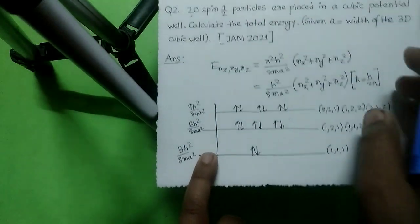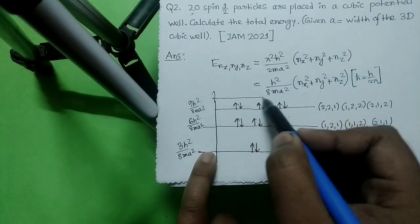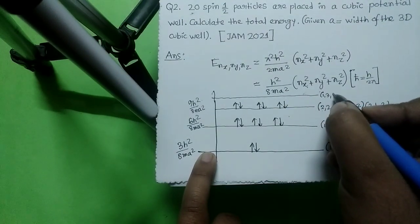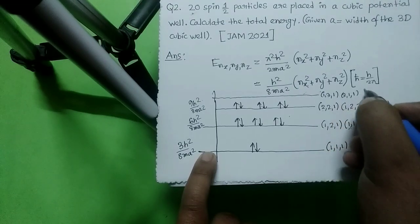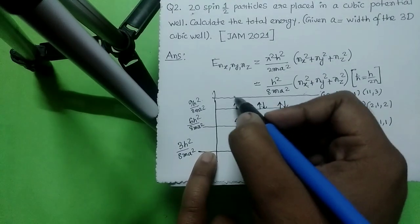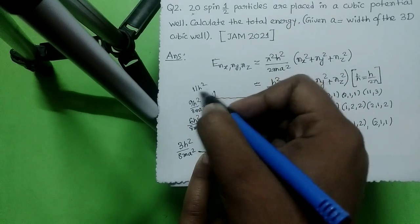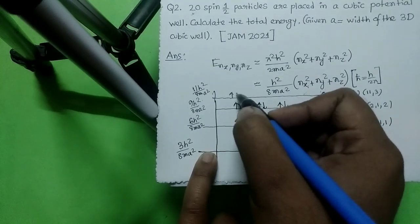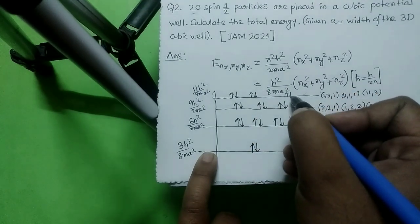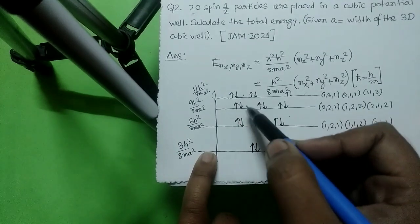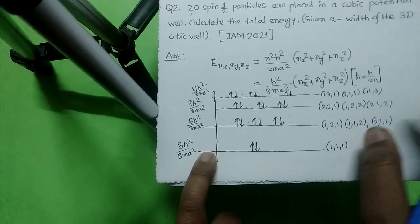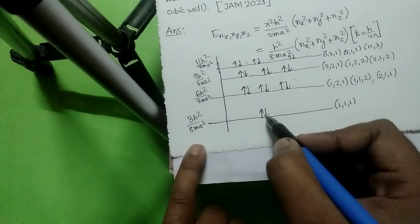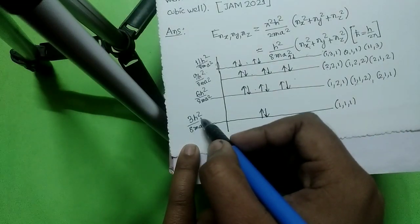Since we need to distribute 20 particles total, we must go to the next energy level. That energy state is defined by quantum numbers (1,3,1), (3,1,1), and (1,1,3), with energy 11h²/8ma². This level holds 6 particles, bringing the total to 14 + 6 = 20. We stop here.